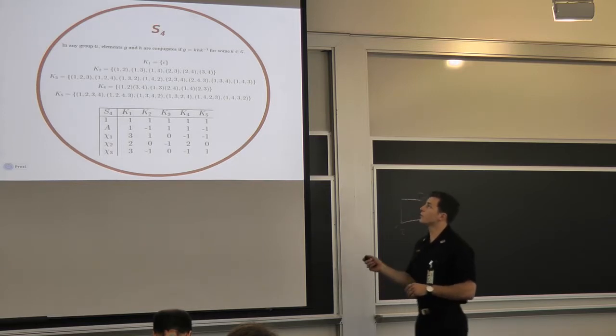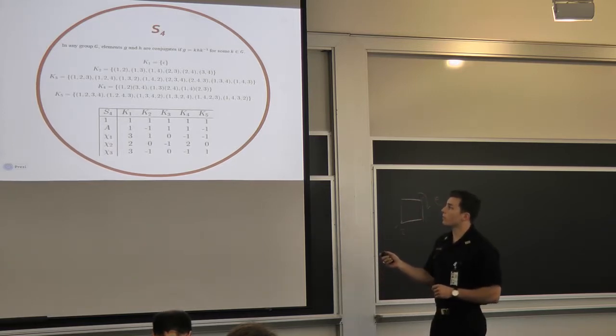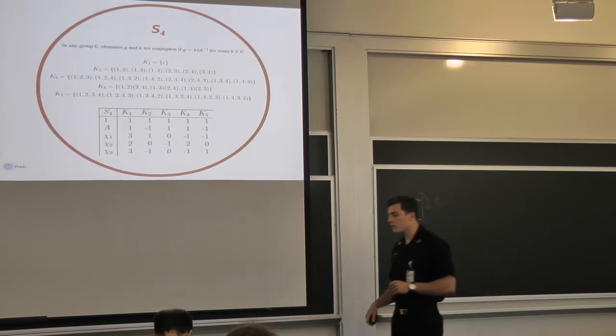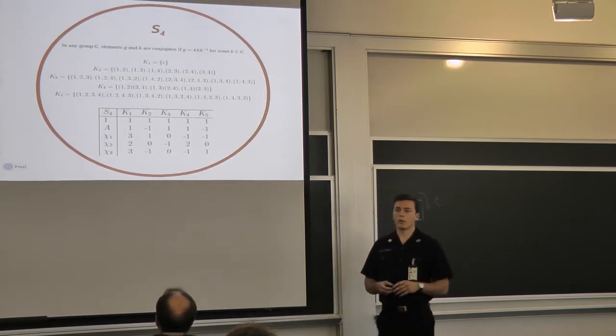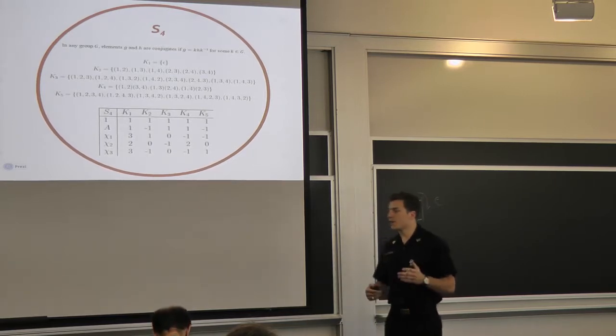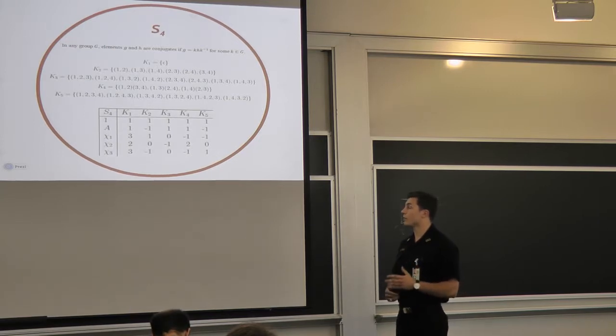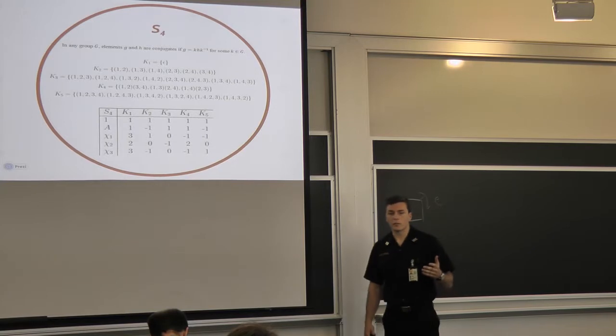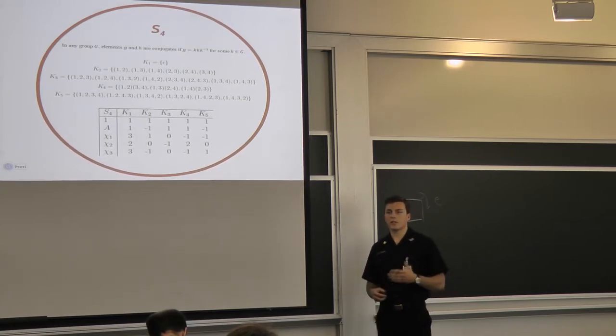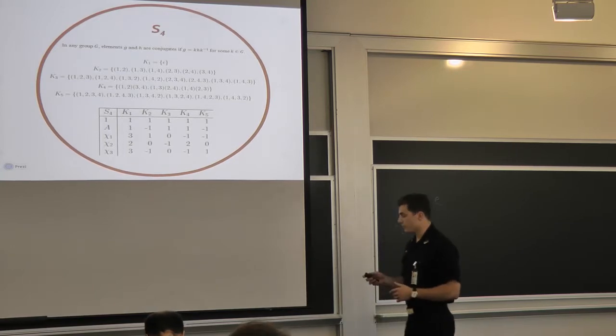And what you end up getting when you start looking at the representations of S4 are this character table here. And the way we originally started looking at it were with tableaus and tabloids and all the polytabloids and all this other stuff that really just got a little complicated. But there are combinatorial methods like the Murnaghan-Nakayama rule where you can actually use pictures to kind of make it simpler and find this character table.